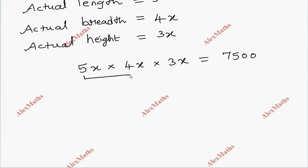Multiplying, 5 times 4 is 20, 20 times 3 is 60. So 60x³ equals 7500.